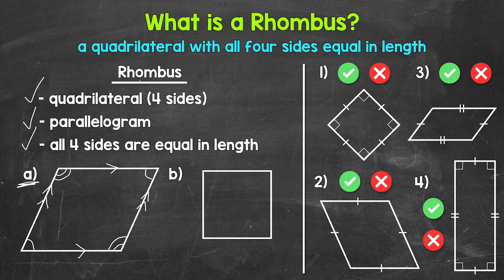A tick mark here, here, here, and here. That's an example of a rhombus. Just remember, rhombuses are quadrilaterals with all four sides equal in length.